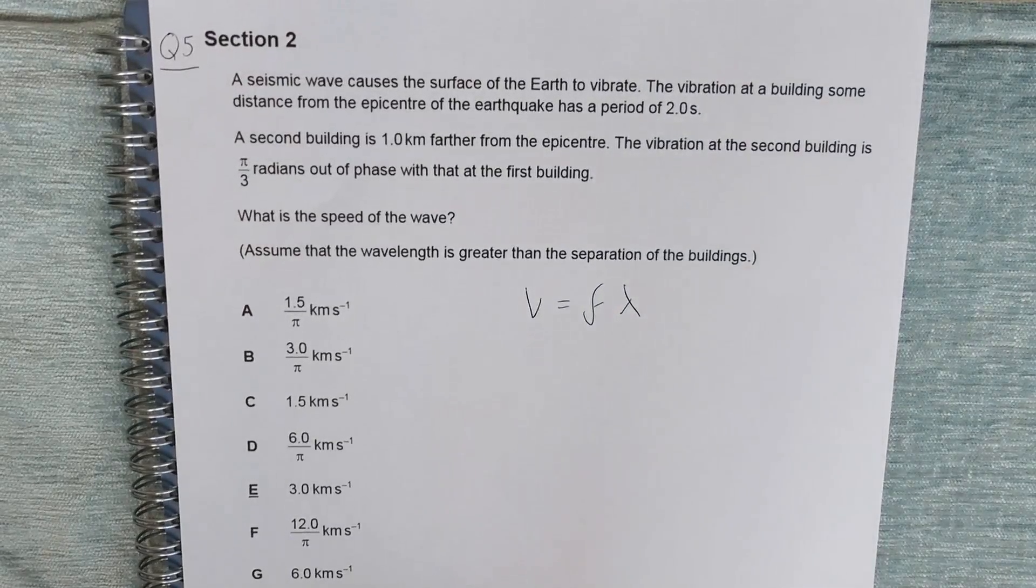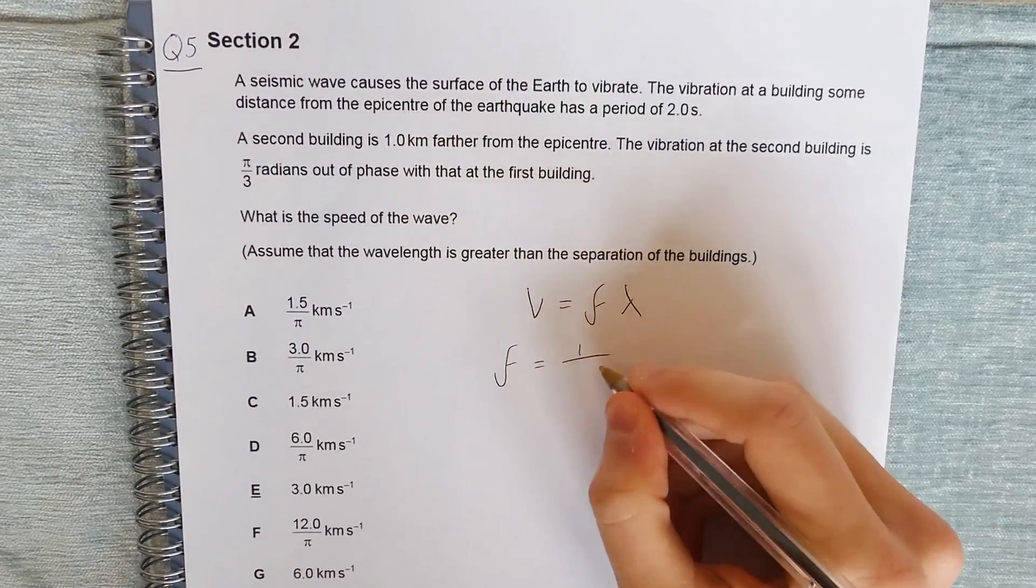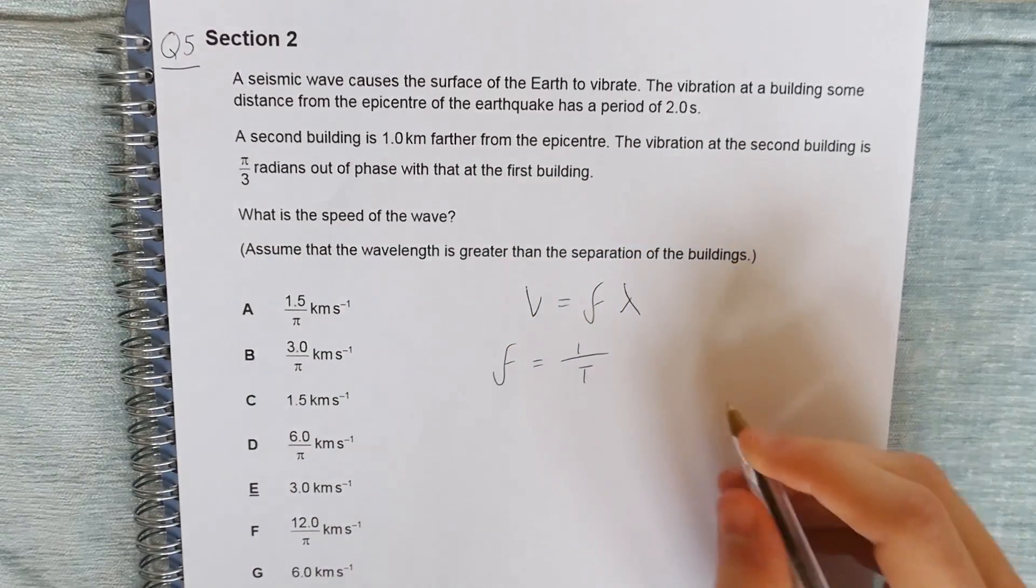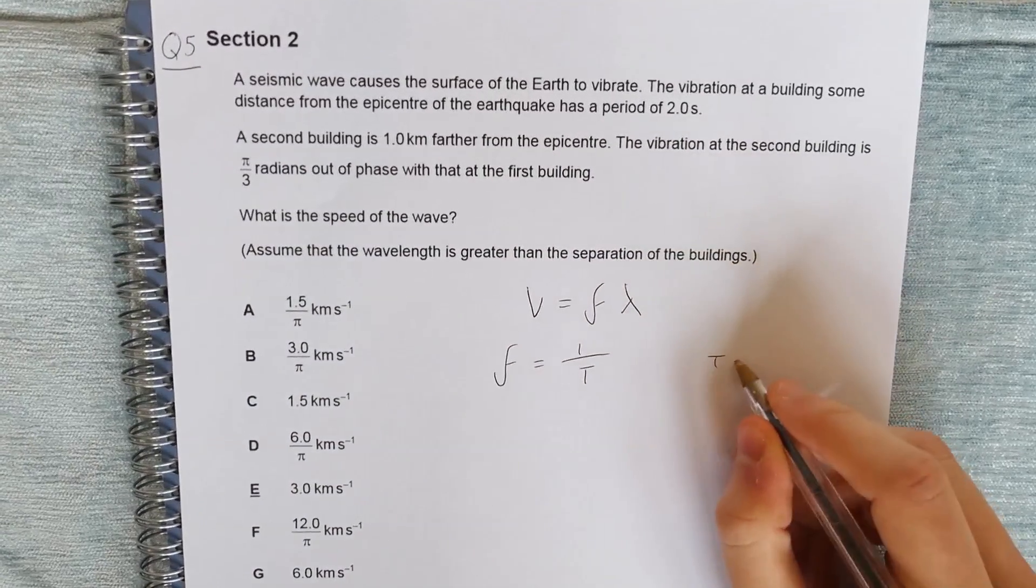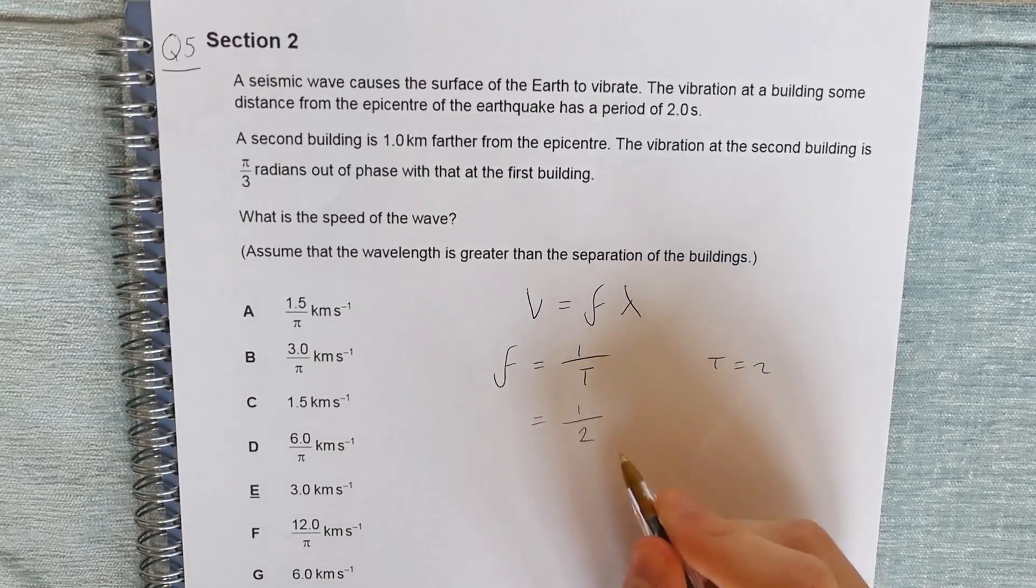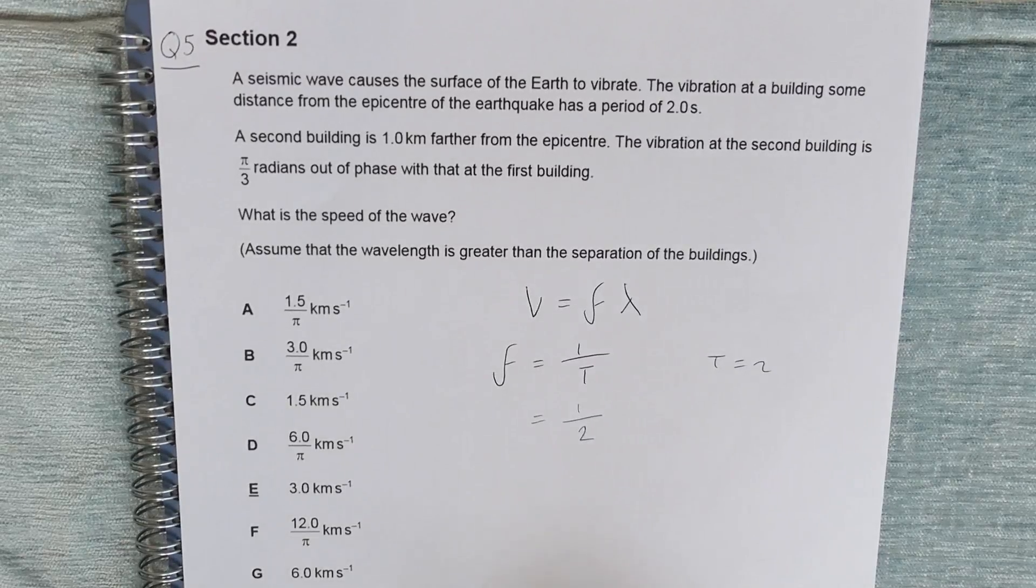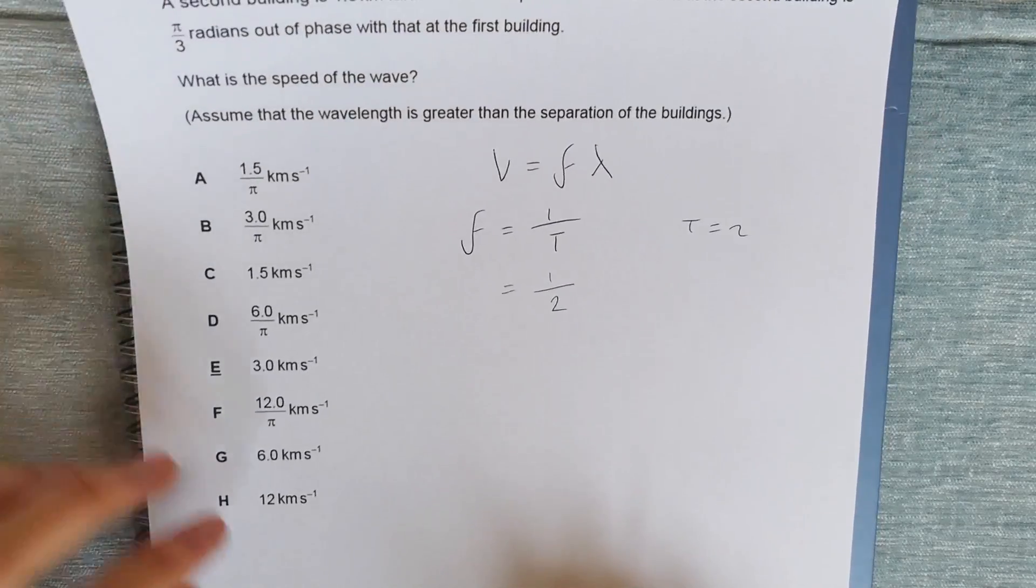So a good start point would be to use the formula for wave speed. So v is equal to f lambda, where f is the frequency and lambda is the wavelength. So f is actually relatively easy to calculate. We know that f is equal to 1 over T, where T is the time period. In this instance, T is equal to 2, so therefore f is equal to 1 over 2, or half. Now to find out what lambda is, we're going to have to be a bit more clever.